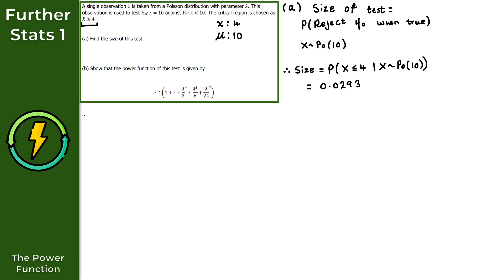For part B, it asks us to show that the power function of this test is given by the stated expression. For the power function, we don't know the value of the parameter — that's the whole point. So we're looking for the probability that X is less than or equal to 4, conditioned on X following a Poisson distribution with an unknown parameter lambda.